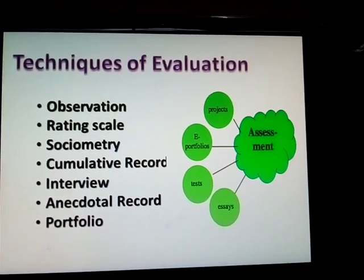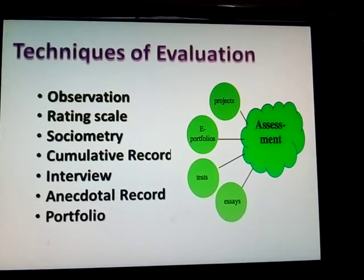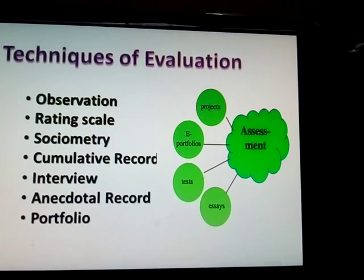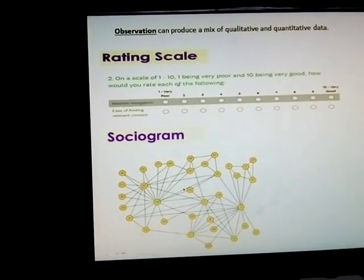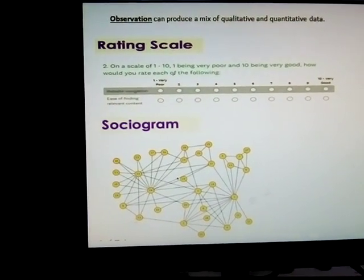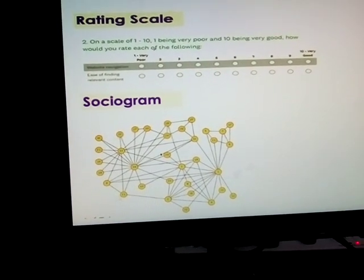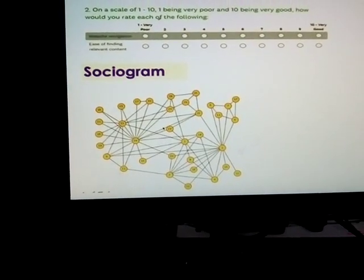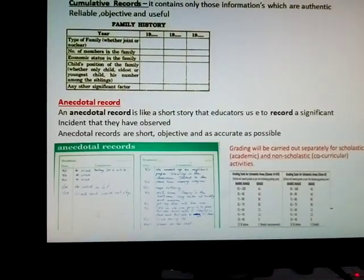Techniques of evaluation: first — observation; rating scale; sociogram; cumulative records; anecdotal records; interviews. Observation can produce both qualitative and quantitative data. Rating scales rank students from 1 to 10, from very poor to good, tracking performance from the starting point to the end of the academic year. Sociogram shows communication between students — student-by-student self-grouping.